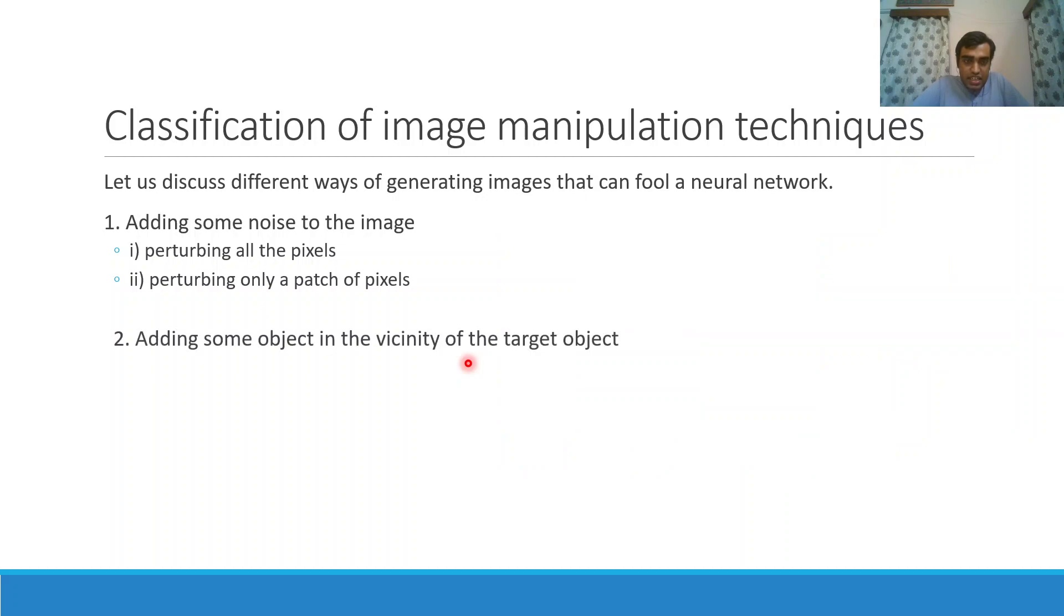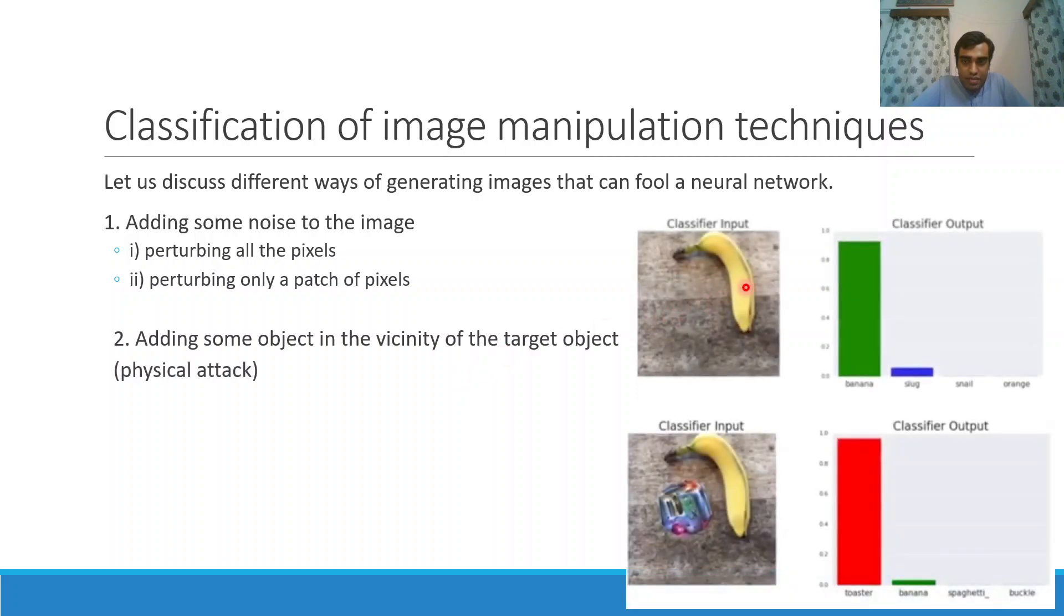Second method is to add some object in the vicinity of the target object or to change the surrounding of the target object. Here's an example: This is a picture of a banana correctly classified as a banana with very high confidence. Now this is the same picture but some extra sticker has been placed here. Now for this image the classifier thinks it is a toaster and it says that with very high confidence.